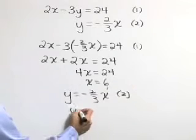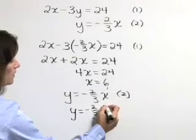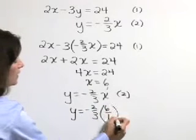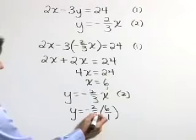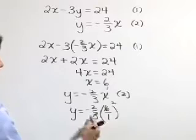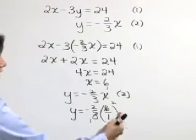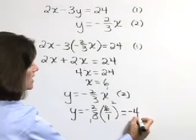So y is equal to negative 2 thirds times, let's write that 6 as 6 over 1, canceling common factors, 3 goes into itself once, into 6 twice. So y is equal to negative 4 over 1 or let's just say negative 4.